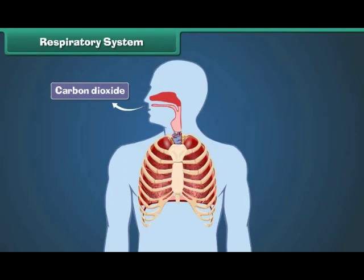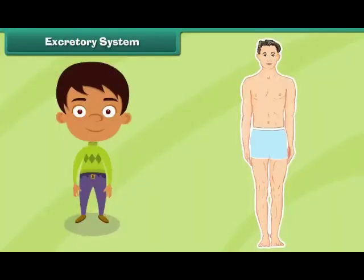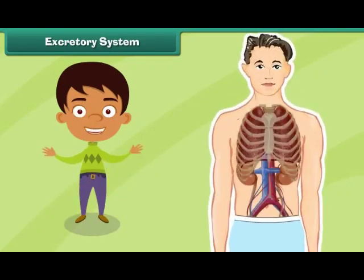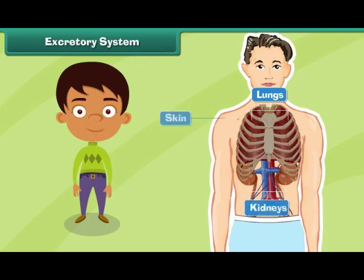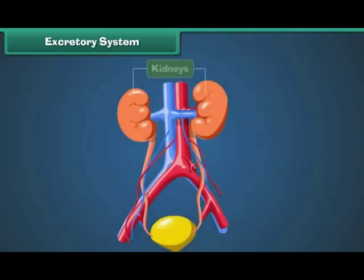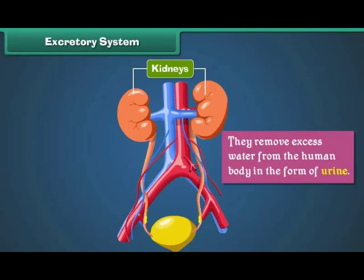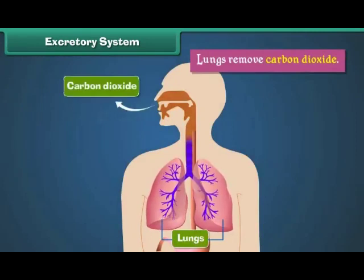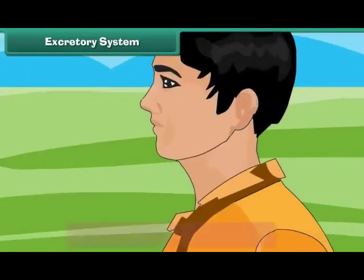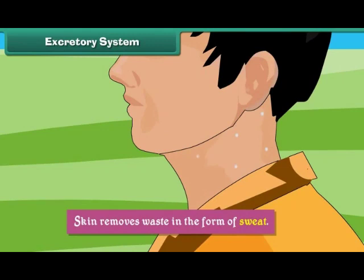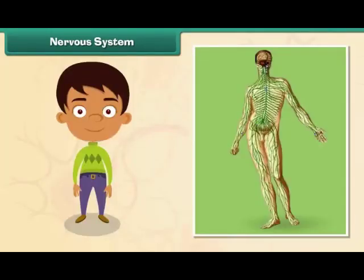Excretory system: The oxygen mixes with food to give us energy. The human excretory system is made up of lungs, kidneys, and skin. It removes wastes from the human body. Kidneys purify blood and remove excess water from the human body in the form of urine. Lungs remove carbon dioxide, and skin removes waste in the form of sweat.